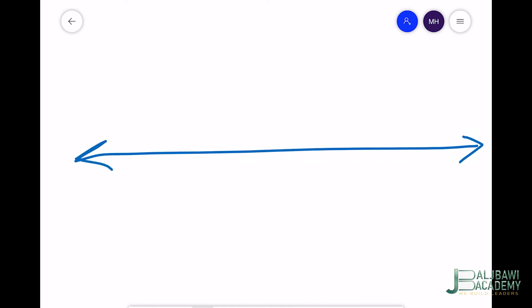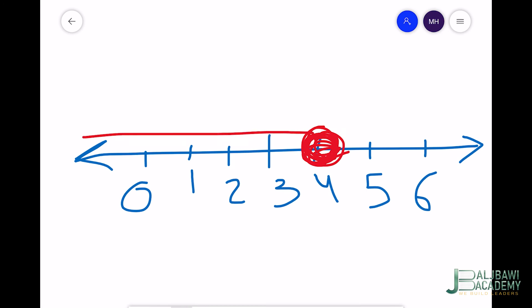Another example: if you have this graph for an inequality—it's a shaded circle, by the way—here I choose any variable, let's choose x. The starting point is 4. What symbol do I need to write here to represent the inequality?